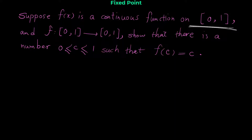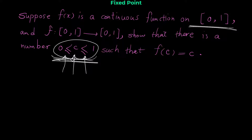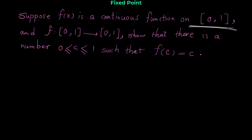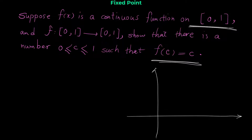What we want to prove is: show that there is a number c, with 0 ≤ c ≤ 1, such that f(c) = c. Let me explain what this means. f(c) = c means we want to find a point where the function value equals the input.